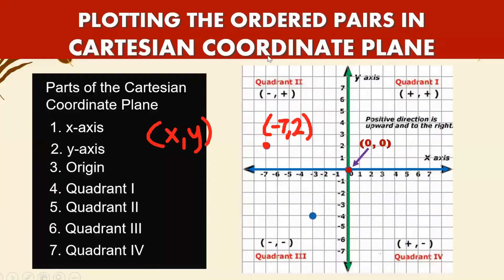I have another point here in quadrant three. In quadrant three, all are negative. Going to the left from zero, you have negative three, so x is negative three. Then your y is negative four. So your coordinates are negative three, negative four.